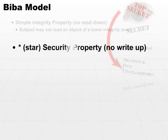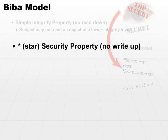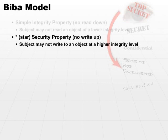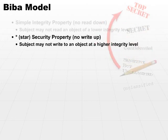The star security property is the no write up property. It means that a subject may not write to an object at a higher integrity level. You don't want to take lower sensitivity data and write it to a higher sensitivity level, because that could corrupt the higher sensitivity document.